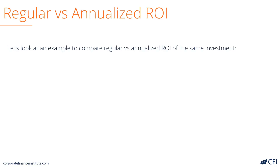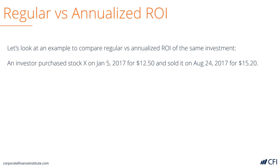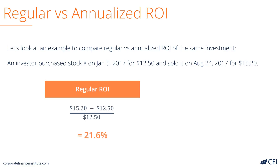Let's look at an example. Imagine that an investor bought a stock in January of 2017 and sold it in August of 2017. The investor has a gain, but it held this investment for less than a year. So the regular ROI is 21.6%.